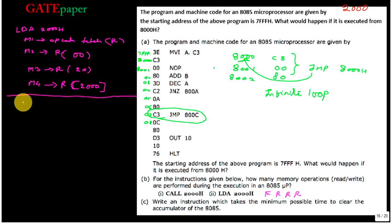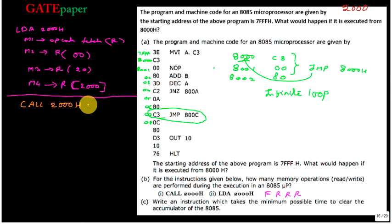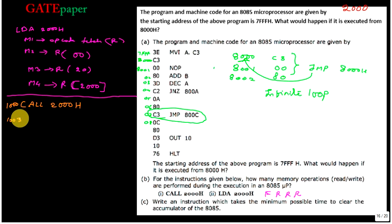Now moving on to the CALL instruction. CALL 2000H is an unconditional call instruction — the microprocessor should go to address 2000H. But whenever it moves to that subroutine, after completing it, it must come back to the calling program. So before going into the subroutine, the microprocessor stores the return address — the address of the next instruction — into the stack. CALL is a 3-byte instruction, so if the call is at address 1000H, the next instruction will be at 1003H.